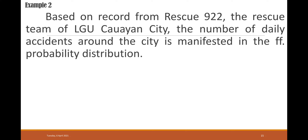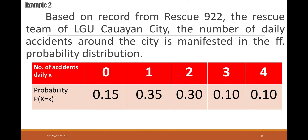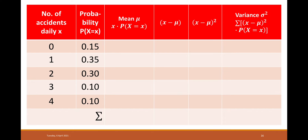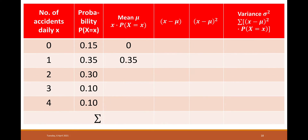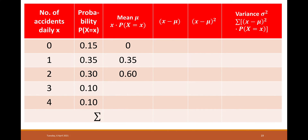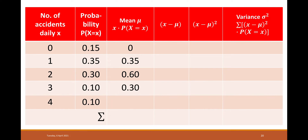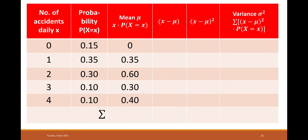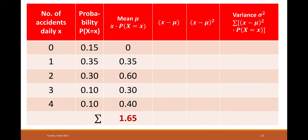Another example: Based on records from Rescue 922, the rescue team of El Gio Kawayan, the number of daily accidents around the cities is given in the following probability distribution. The number of accidents daily is 0, 1, 2, 3, and 4, with probabilities 0.15, 0.35, 0.30, 0.10, and 0.10. Using the table method, we multiply x by P(x): 0 × 0.15 = 0; 1 × 0.35 = 0.35; 2 × 0.30 = 0.60; 3 × 0.10 = 0.30; 4 × 0.10 = 0.40. The summation is 1.65, so the mean is 1.65.